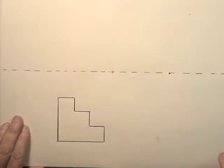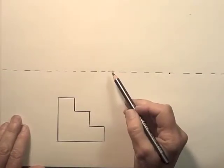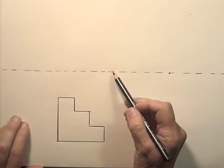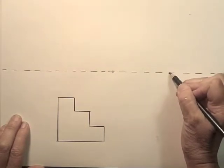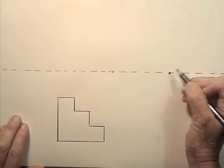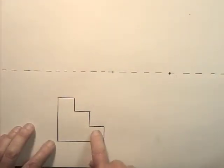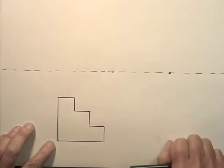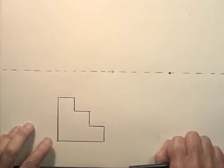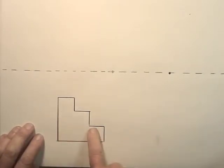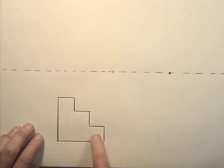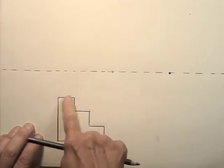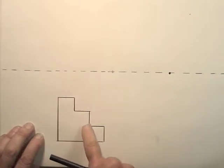When you're using one-point perspective, you don't always have to put the vanishing point right in the middle — you can move it over to the side. I'm going to show you how to do stair steps in one-point perspective. I've started out by just drawing the steps from the side, which is easy to do just by using a ruler.